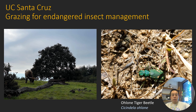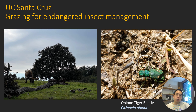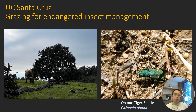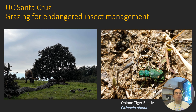The Ohlone tiger beetle needs bare ground to nest and complete its life cycle and ensure its persistence. Land managers manipulate grazing timing and intensity — grazing doesn't occur while these beetles are actively completing their life cycle, generally from around February to May. Grazing occurs at other times of the year to remove biomass, create habitat heterogeneity, and support the bare ground this endangered insect needs. Stocking rates are also adjusted depending on forage production related to precipitation that year.